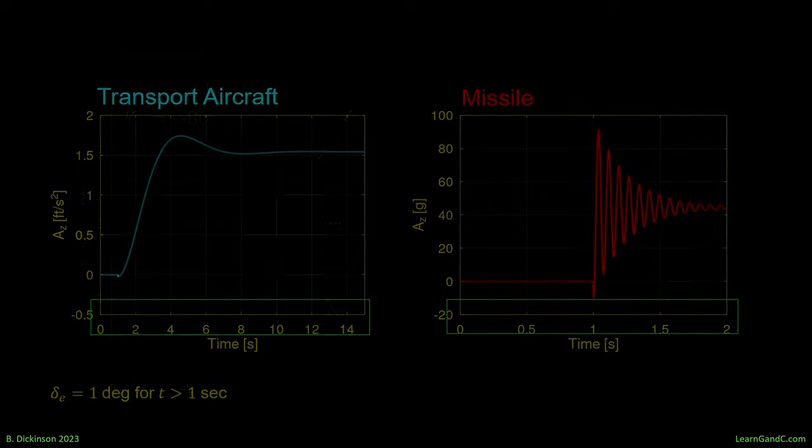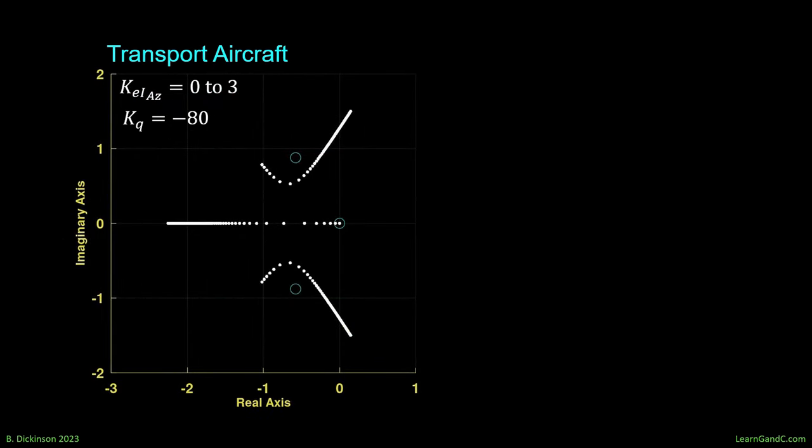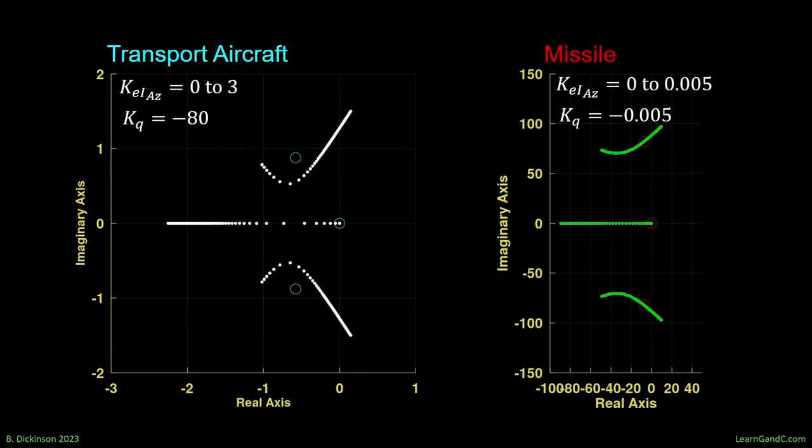The root loci show similar patterns. Short period moving into the right-half plane. Integral air moving left. But check out the gains for the missile. We mentioned the missile had much more control effectiveness. The B matrix was much larger. And this is leading to much smaller gains being needed to move the closed-loop poles.